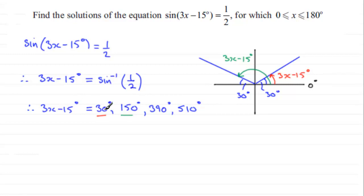So when I add 15° to each of these, it's going to leave me with 3x. So 3x would equal 45°, 165°, 405°, and 525°.